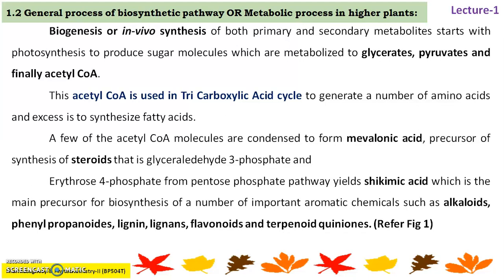Glucose, when it undergoes metabolism, processes three different pathways simultaneously: the shikimic acid pathway, acetate pathway, and amino acid pathway. Acetyl-CoA is formed and further enters the tricarboxylic acid cycle to yield fatty acids and amino acids. Acetyl-CoA also condenses to form mevalonic acid, giving rise to steroids like cholesterol. The pentose phosphate pathway yields erythrose-4-phosphate, which yields shikimic acid — the main precursor for biosynthesis of important aromatic amino acids and secondary metabolites such as alkaloids, phenylpropanoids, lignins, lignans, flavonoids, and terpenoids.